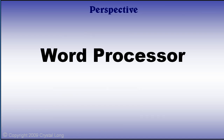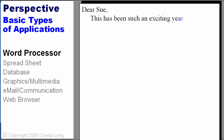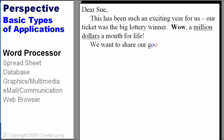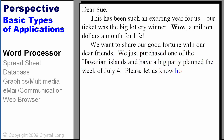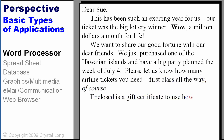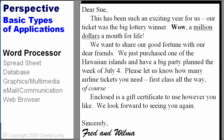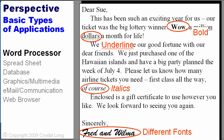A word processor gives you blank electronic paper to write, edit, and produce text. Although many packages give you capabilities for incorporating graphics, the main function is to work with text. In the Microsoft Office Suite, the word processor is called Word. You can use Word to write letters, format text, bold, underline, italics, use different fonts, and much more.